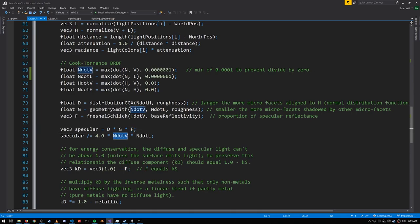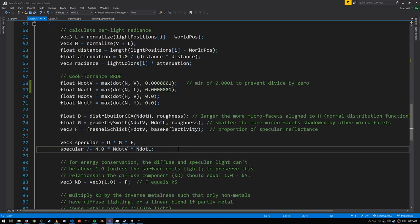N dot V and N dot L are also going to be in between zero and one. And because we're dividing the specular by them, the closer these values are to zero, the larger the specular value is going to get. Again, I can't explain exactly the logic here, but it does make sense that as the view vector and the light vector diverge from the normal, the more intense the specular light should get.